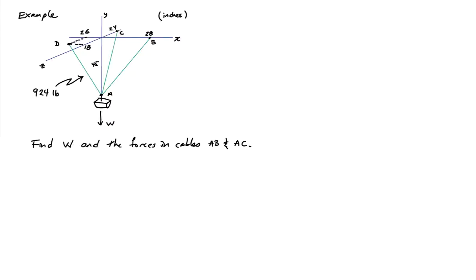Let's consider another example that involves the case of concurrent forces. Here I have an object with weight W, and it's suspended by three cables shown here in green. There's a cable from A to B, A to C, and A to D, and we're told that the tension in cable AD is 924 pounds.